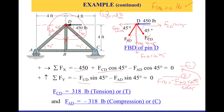Remember, whatever is happening at the joint is also happening to the member, since we've isolated it. So the member is in tension — the force is a tension force. Once we have F_CD, we can find F_AD: since F_AD equals negative F_CD, that's minus 318 pounds, which means compression. So the member AD is in compression, and the joint is also feeling compression.